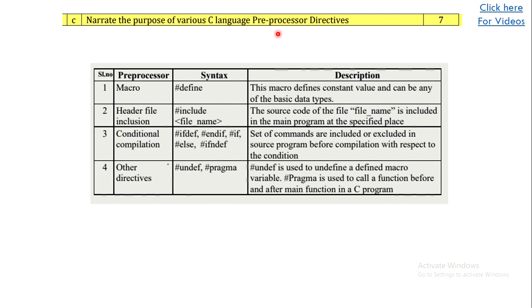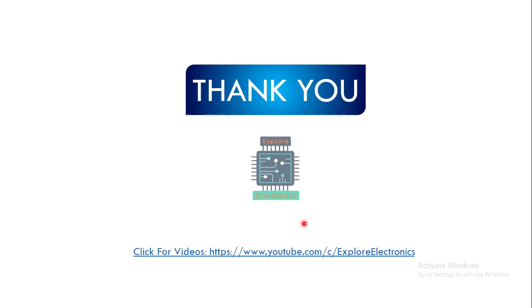The last question asks to narrate the purpose of various C language preprocessor directives. Write all the preprocessor directives available in C, write the syntax for each, describe them, and give small examples. Give an example for macros, for #include, and for conditional compilation, as well as examples for other directives. This will fetch you the complete seven marks. Thank you all.